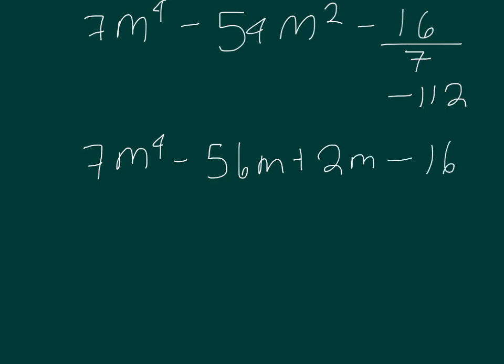All right, and after you've done that, you're going to want to put those two in parentheses. And then we're going to factor. So we're going to take out a 7m squared from this. And that's going to leave us with m to the second minus 8.